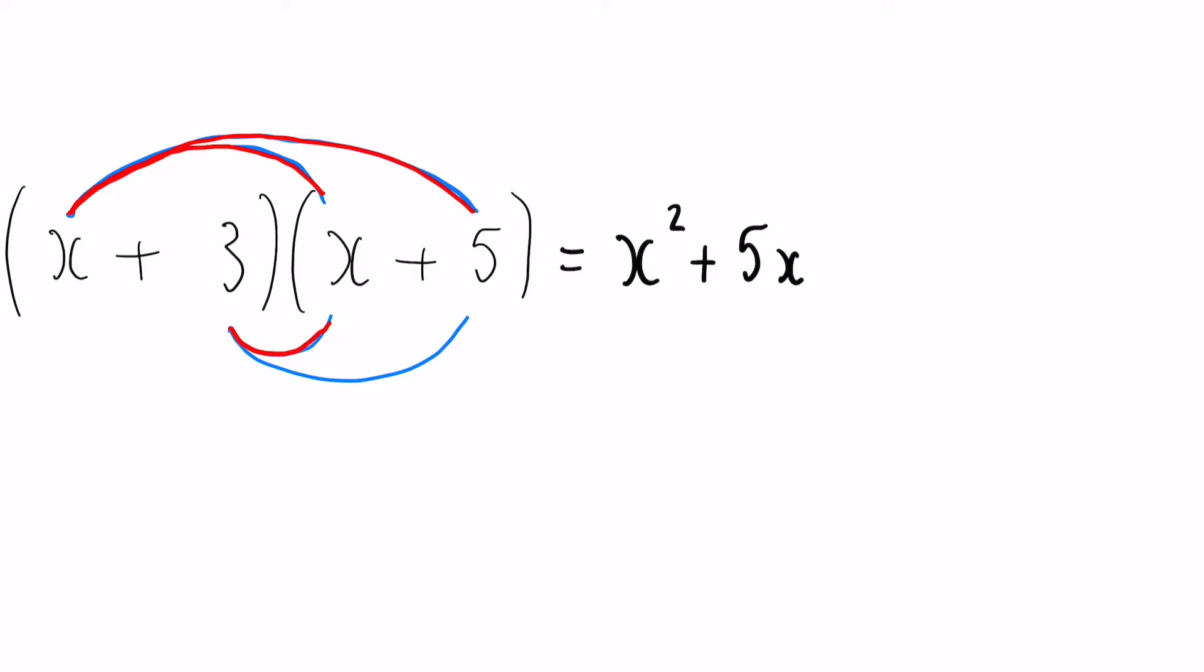Now we have to do the second claw: three multiplied by X, and that is a positive three. It is always important to check that. So three multiplied by X gives us a plus three X. Finally, we have this three times by five. Again, both positive numbers, so three multiplied by five gives us a positive 15.